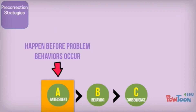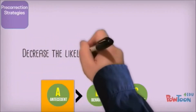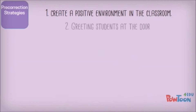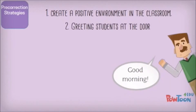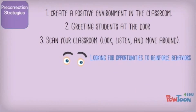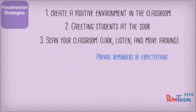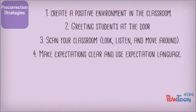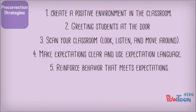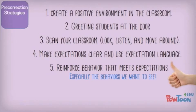Pre-correction strategies happen before problem behavior occurs and are designed to decrease its likelihood. First, create a positive environment by greeting students at the door, using their names, and actively scanning the classroom — looking and listening, moving around, looking for opportunities to reinforce appropriate behaviors and remind students of expectations. Make expectations clear and use language that reflects them. Tell students when they're being respectful, responsible, and ready to learn. Always reinforce behavior that meets expectations — pay a lot of attention to behaviors you want to see in order to increase their likelihood.